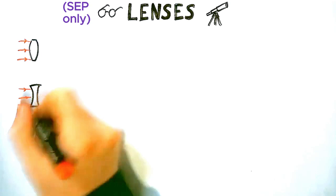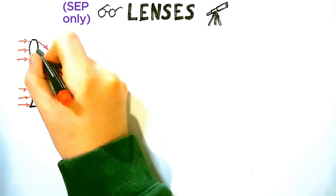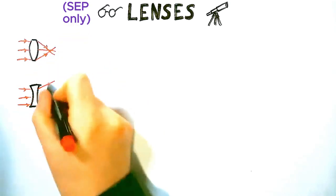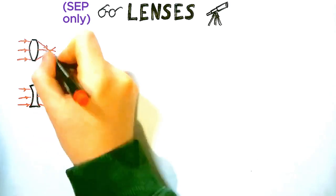Now let's look at the basics of lenses. There are two types of lenses. One makes the light come together to a point, one makes the light spread out or go further away from each other.